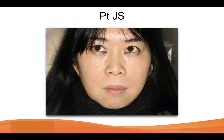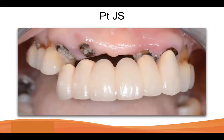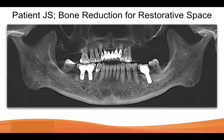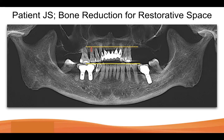Here's another patient example. We're not doing bone reduction for aesthetics in this case — she has a very low lip line and she's clearly been hiding that mouth for a long time. Her issue is that we don't have enough restorative space on the upper right side. So we need to do bone reduction to create enough restorative space. In this case, we're not looking at it from an aesthetic lens — we're looking at it and saying we need enough restorative space.